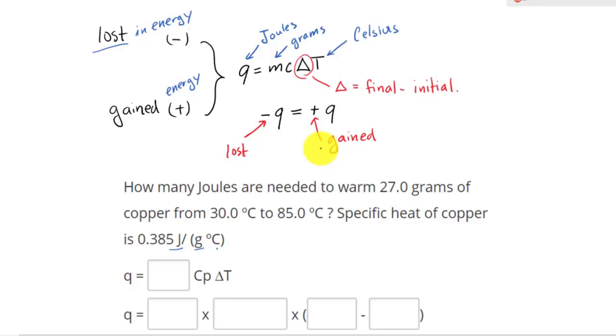Now let's apply these concepts to solve some problems. How many Joules are needed to warm? Think about warming. To warm something, you take in energy. To warm 27.0 grams, and this right here would be your mass, of copper. And this is the substance, copper.